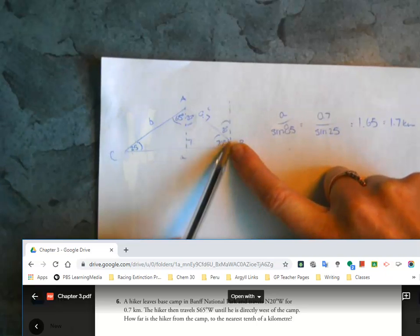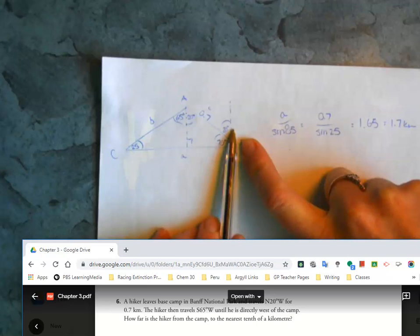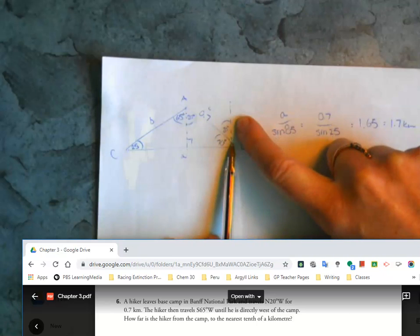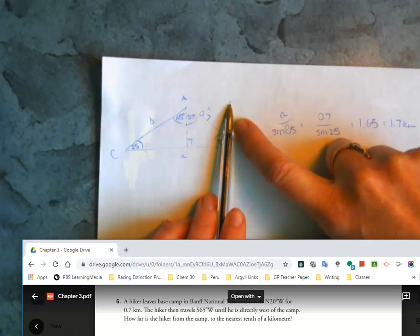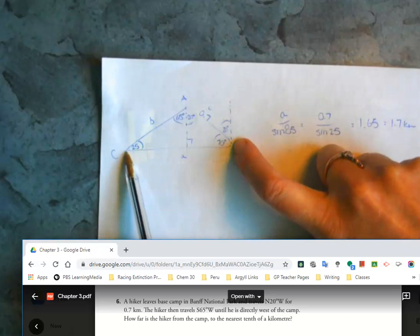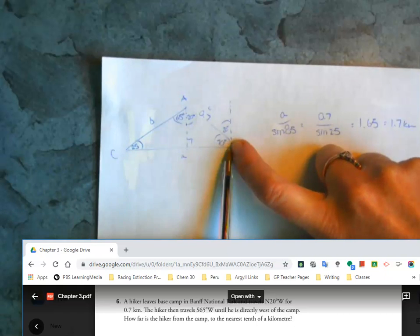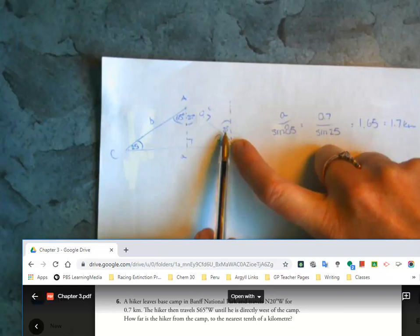Basically what I did is, to start out with you have 20 degrees here that they gave us because he was going to the west of north. Of course if you do the last leg of his journey was directly west, so north and west make a perfect 90 degree angles. So if this one was 20, then I knew that this angle here to make up the full 90 had to be 70.